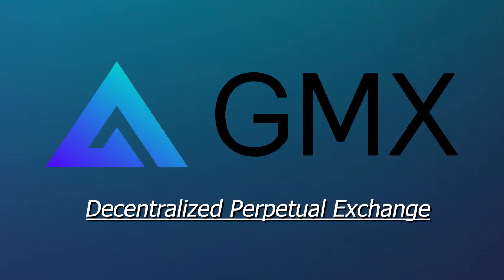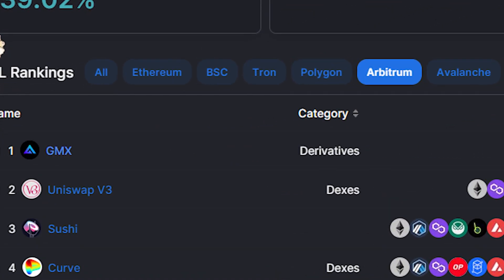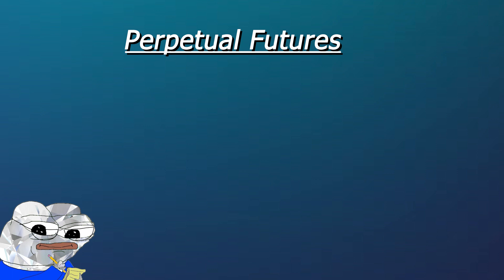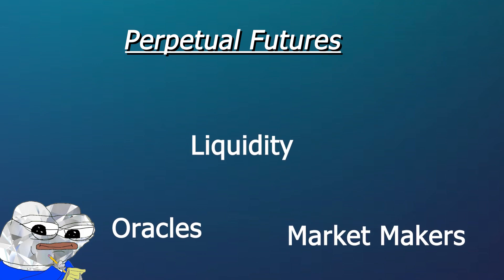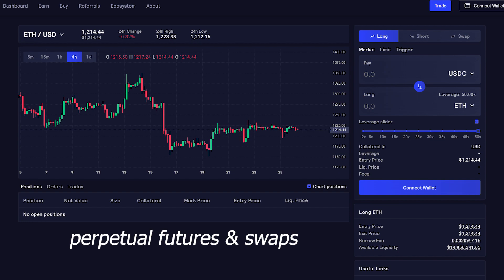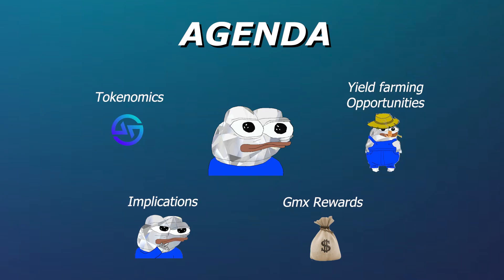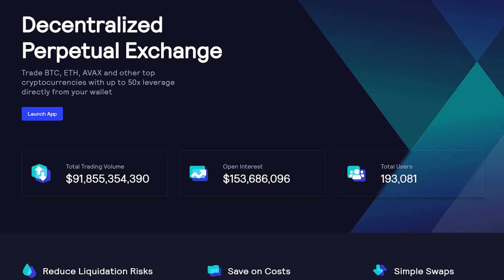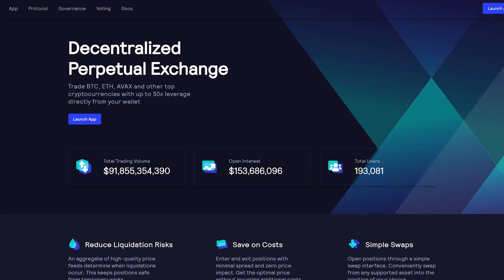What is GMX? In this video we will cover everything you need to know about Arbitrum's biggest decentralized protocol. We'll do a deep dive into how their main product, perpetual futures, work as well as some of the mechanics which enable it to work so well. I'll take you on a tour of their user interface and show you all you need to know about trading perpetual futures and swaps. We'll cover their tokenomics, yield farming opportunities, reward mechanisms, and the implications of their protocol to the Arbitrum ecosystem. Without further ado, let's get into GMX, the decentralized perpetual exchange.